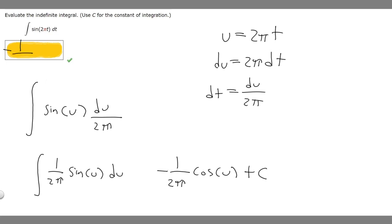If we just add that in, our final answer is going to be minus 1 over 2π times the cosine of 2πt, and then plus C. So this is your final answer.